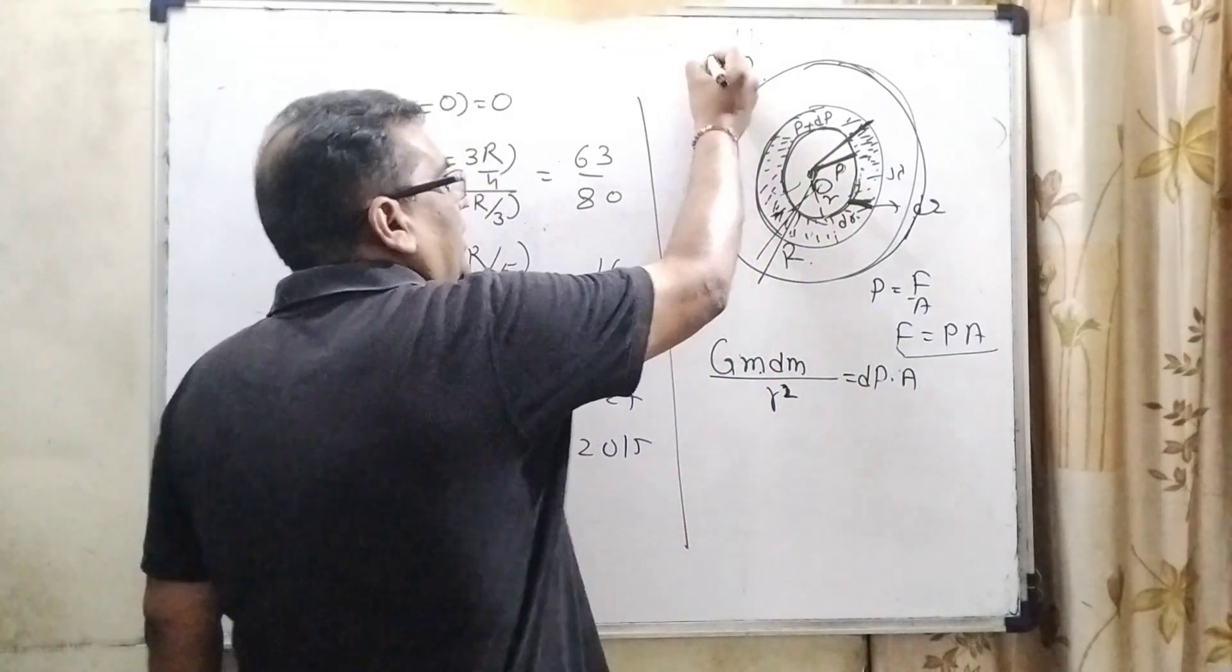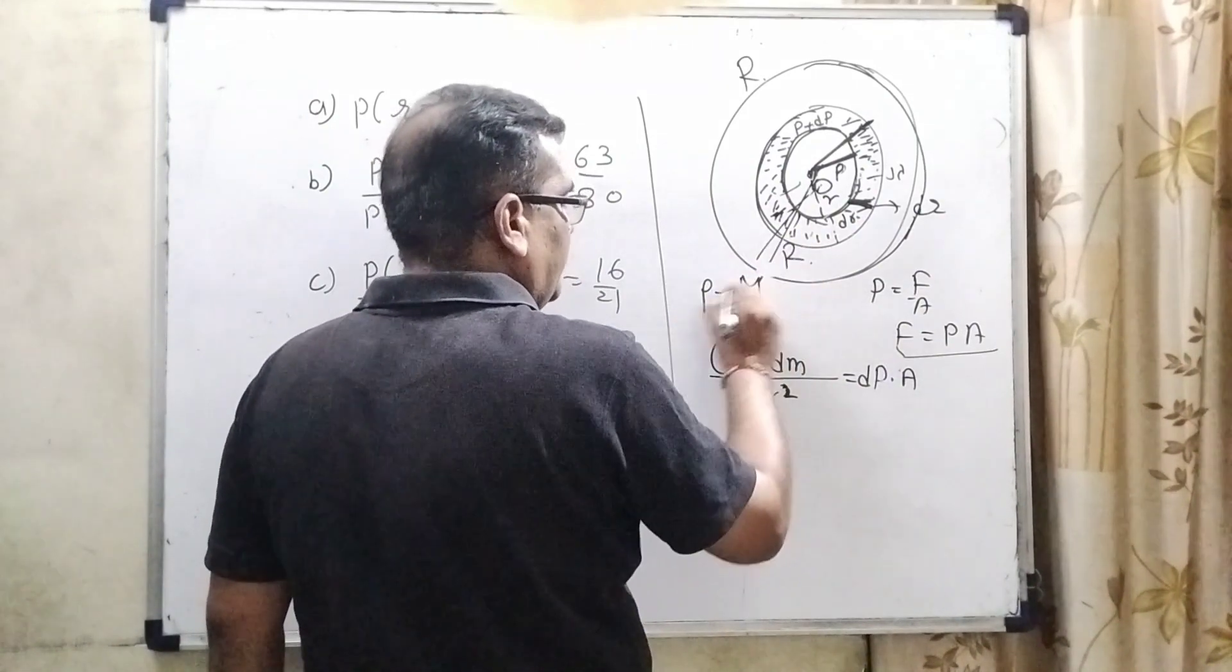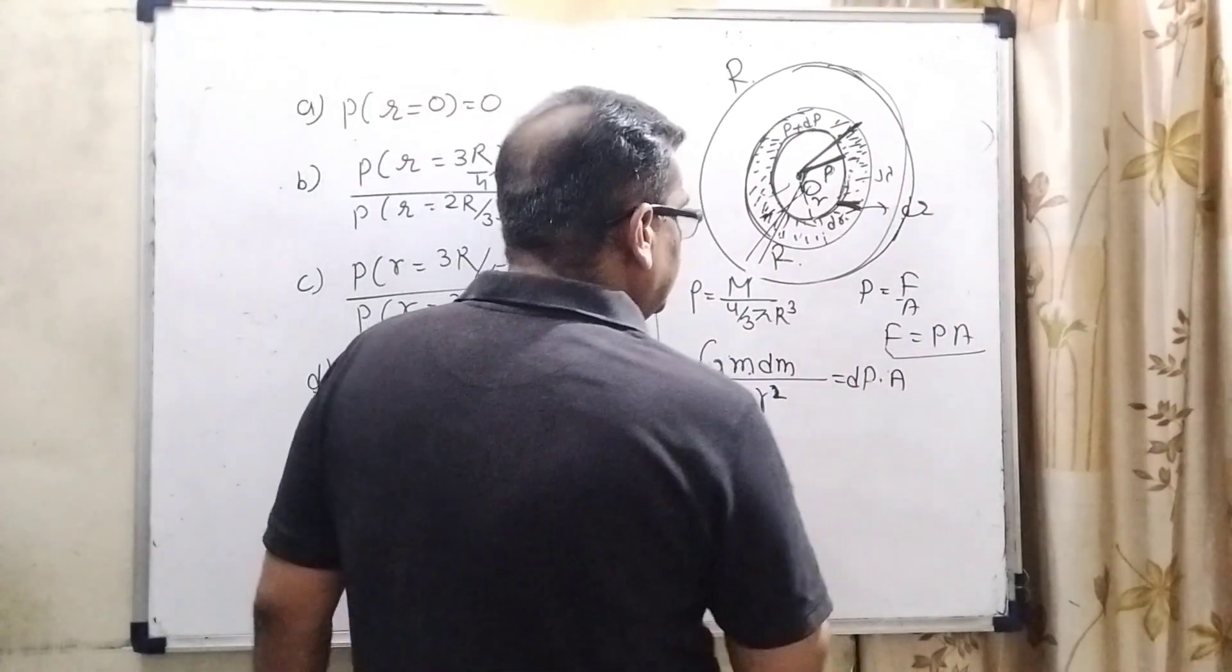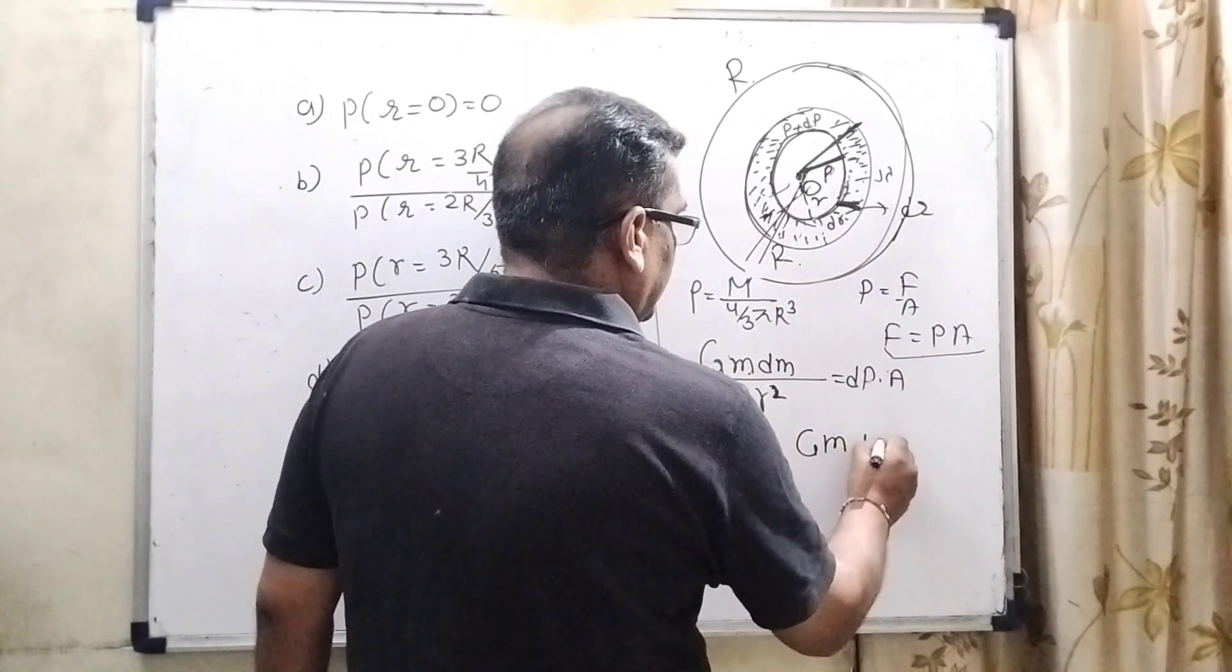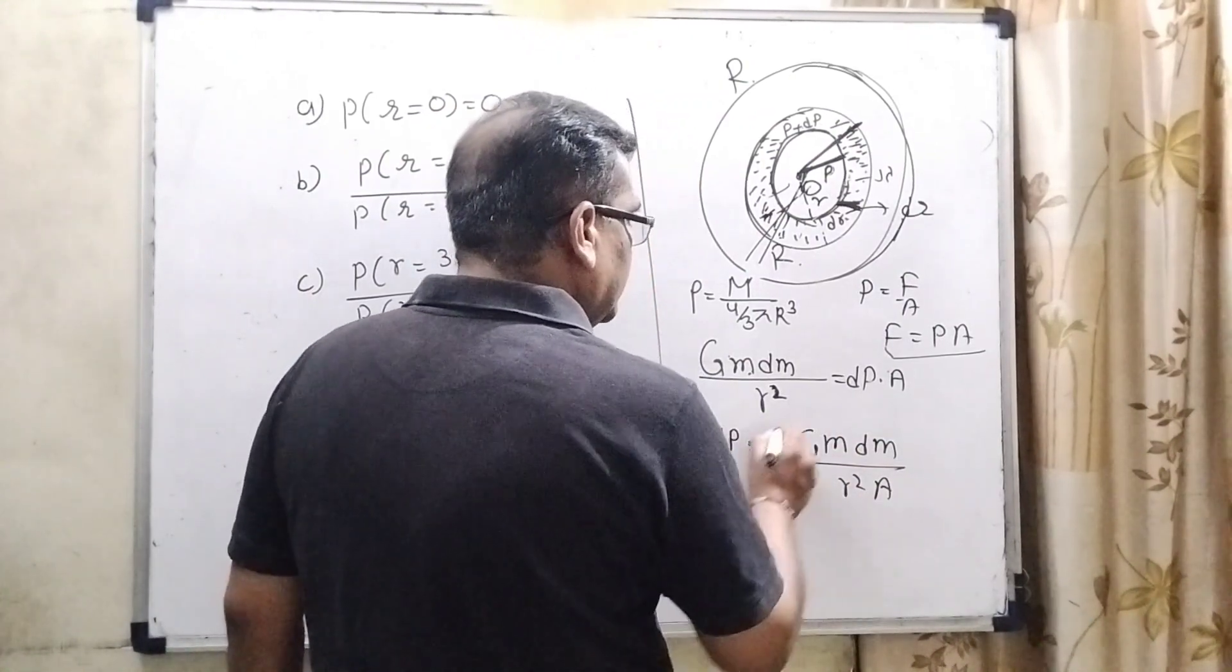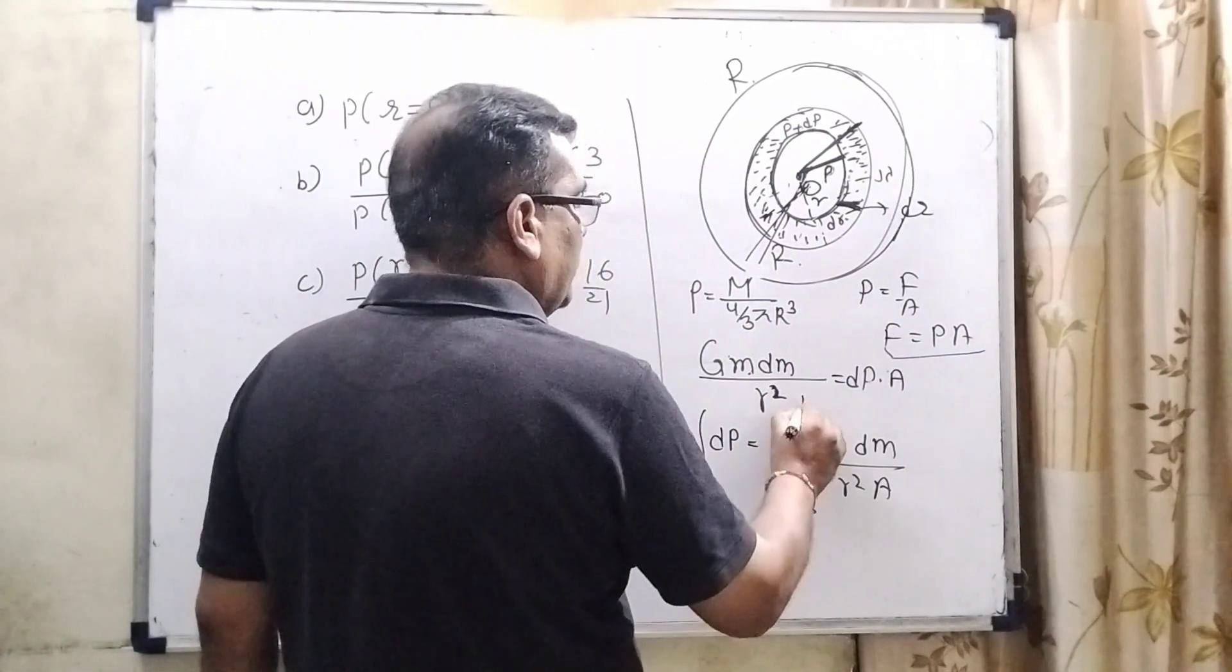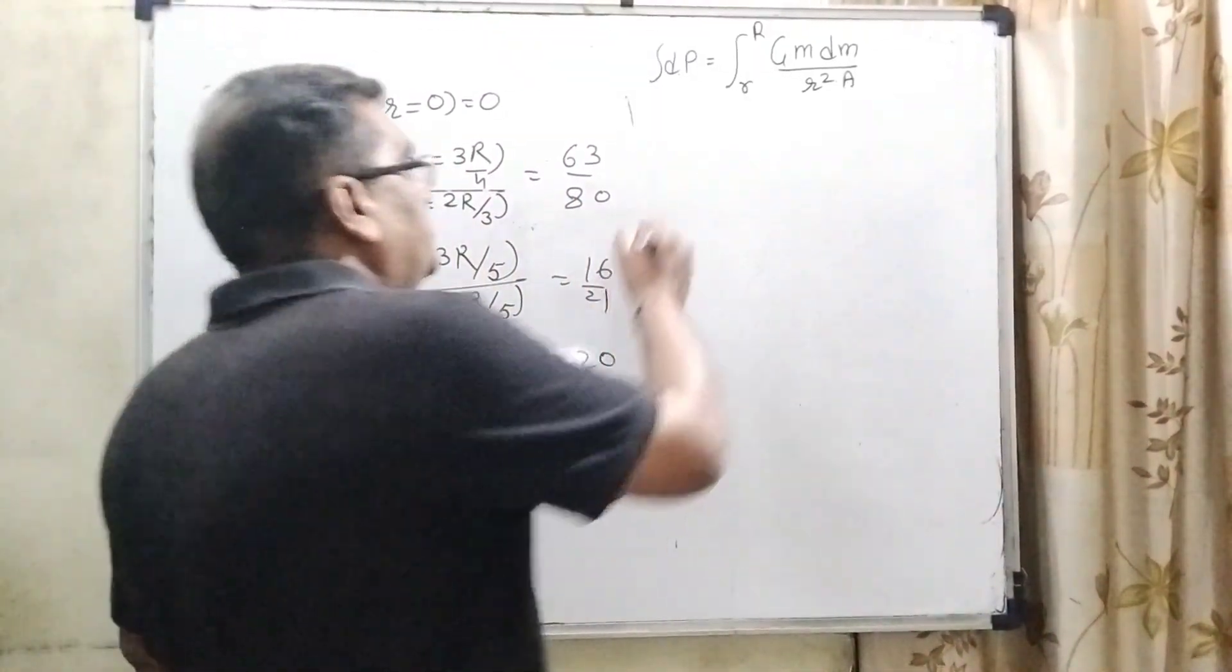Now here the density is equal to mass of the whole sphere, capital M, upon 4 by 3 pi capital R cube. This is the mass. Now it can be written as dP equals G small m dm upon r square into A. Now integrate both the sides. You know that we have already discussed that the distance is taken from small r to capital R. Lower limit is small r and upper limit is capital R.